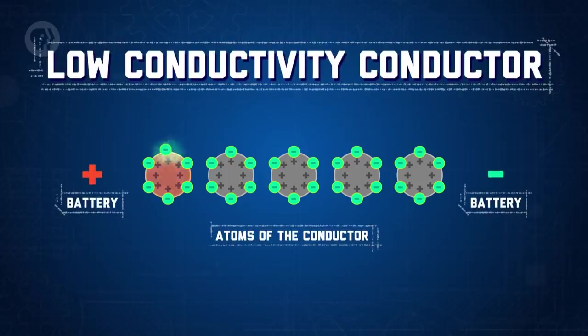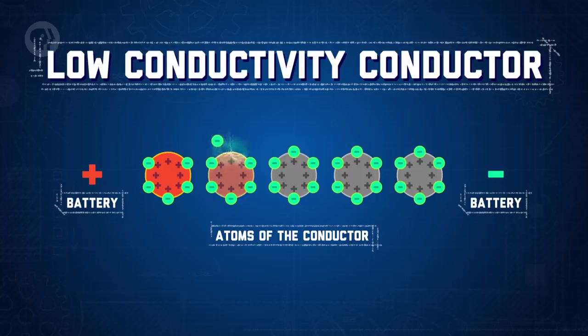But even within the circuit itself, materials on the lower end of being conductors are often super important. You might have noticed that your new place doesn't really have much lighting yet. That's where low-conductivity conductors can help us. When we apply a current in a low-conductivity conductor, the electrons can't zip past the material's atoms quite as easily, and carry all the electrical energy through.